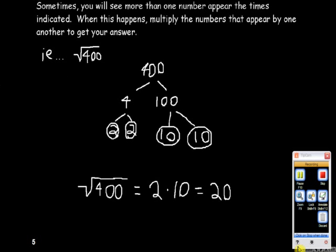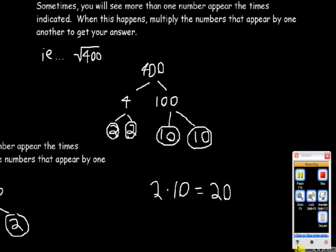Sometimes you will see more than one number appear the number of times indicated. When this happens, you multiply the numbers that appear by one another to get your answer. For example, you find the square root of 400. Say we factored 400 into 4 and 100. Four factors into two twos, and 100 factors into two tens. So we get 2 and 10. We multiply those together and we get 20. And of course, when we check our answer, 20 times 20 equals 400.